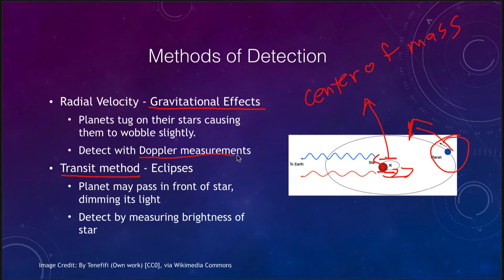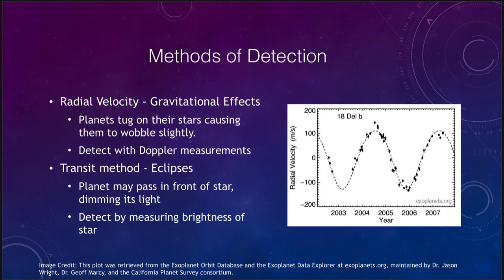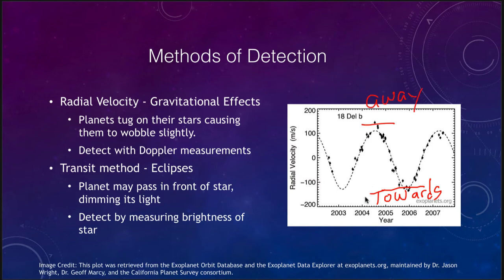We can use the Doppler effect and measure the spectrum of the star and see how it is moving. Looking at an example, the star will have a velocity whether it's coming towards us or away from us. When we see the radial velocity is negative, that's where the star is coming towards us, and when the radial velocity is positive, it is moving away from us. With a single planet, the velocity changes in a very distinct pattern, allowing us to determine the period of revolution of the planet, and the amount of the velocity shift can help us determine the mass of the planet.